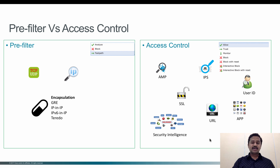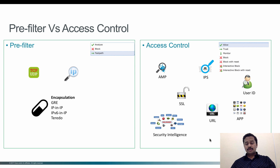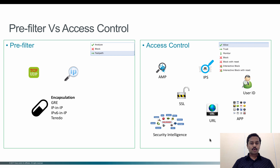On the other side, if you know that two particular networks do not need to talk to each other - for example, the HR network does not want to talk to the R&D or a server network - you could create a rule with the HR network and the R&D network and then have the action as block. That means you don't need to waste FTD resources doing an inspection to block traffic you already know is not needed.